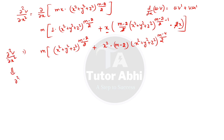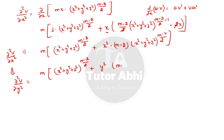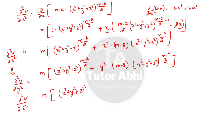Similarly, ∂²v/∂y² is obtained directly by symmetry — replace x² with y² in the extra squared term. So ∂²v/∂y² = M[(x² + y² + z²)^((m−2)/2) + (m−2)y²(x² + y² + z²)^((m−4)/2)]. In the same way, ∂²v/∂z² = M[(x² + y² + z²)^((m−2)/2) + (m−2)z²(x² + y² + z²)^((m−4)/2)].